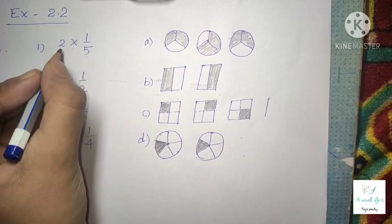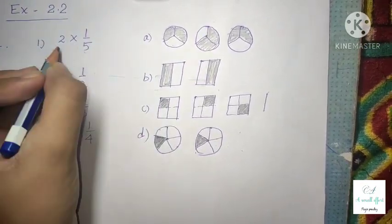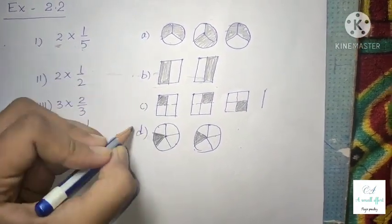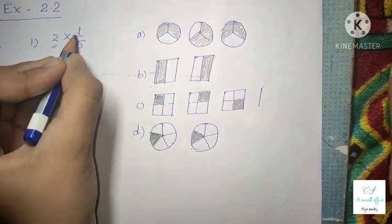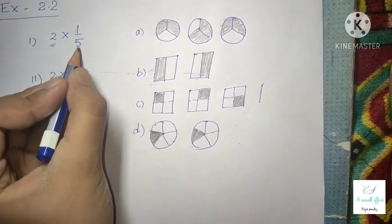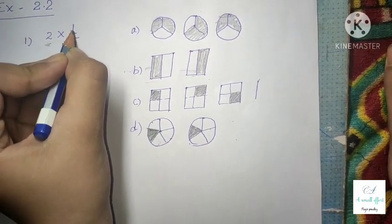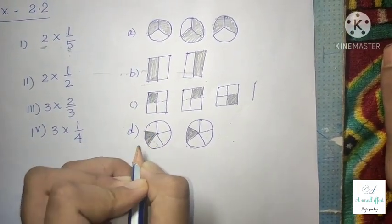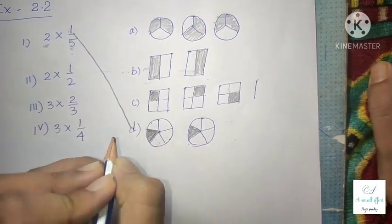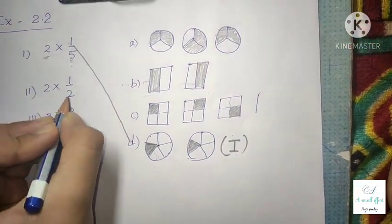Option 1 is 2 × 1/5. This means there should be 2 objects in the figure, so options B and D have 2 objects. The denominator is 5, meaning the option should have 5 equal parts — D has 5 equal parts. The numerator is 1, meaning 1 part is shaded. So option 1 is matched with option D.